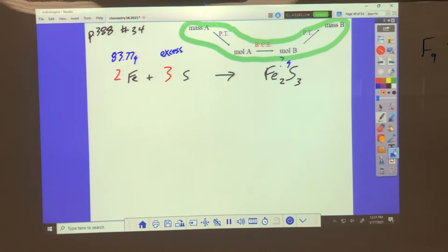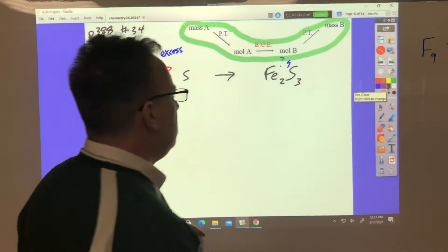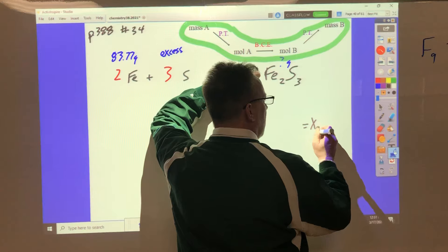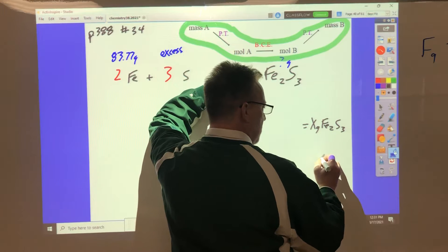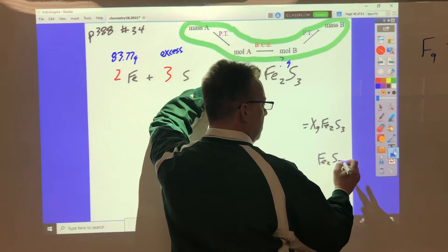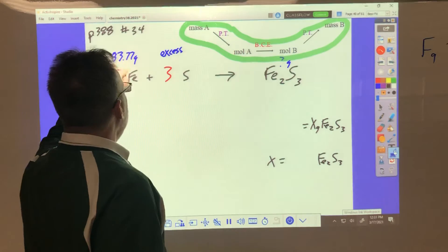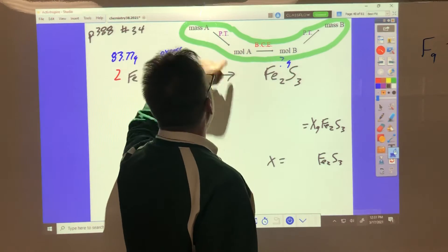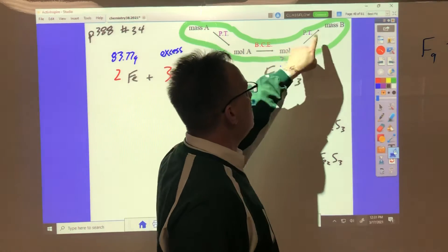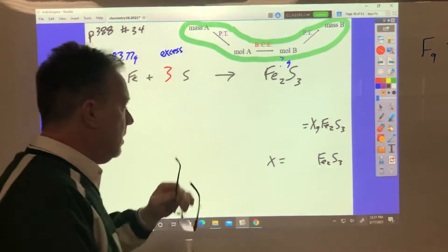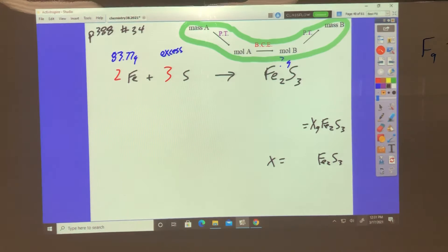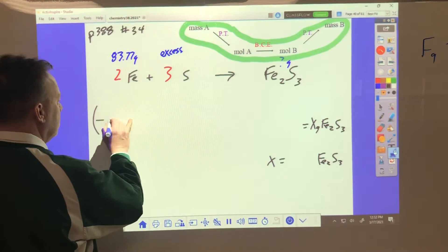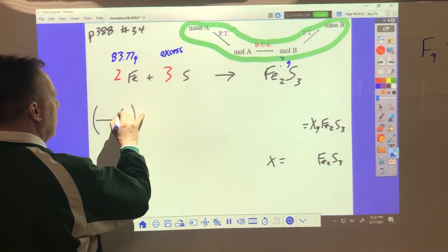So we want the theoretical yield in grams, which means we want to know x grams Fe2S3. X equals so many grams Fe2S3. We are going from grams Fe to grams Fe2S3, so mass to moles to moles to mass. We're doing the whole thing. If we start with what we know, which is the 83.77 grams Fe.